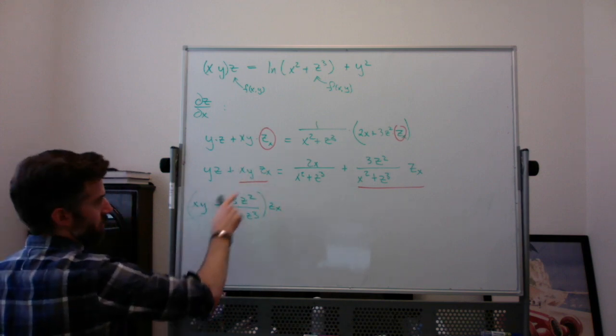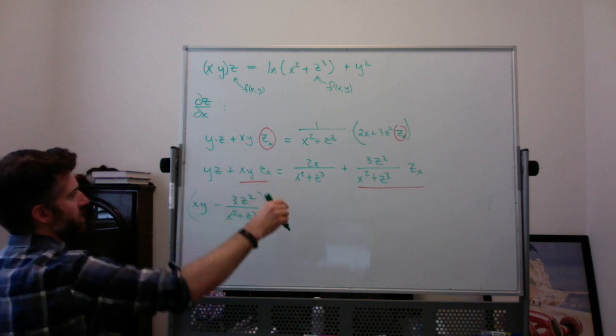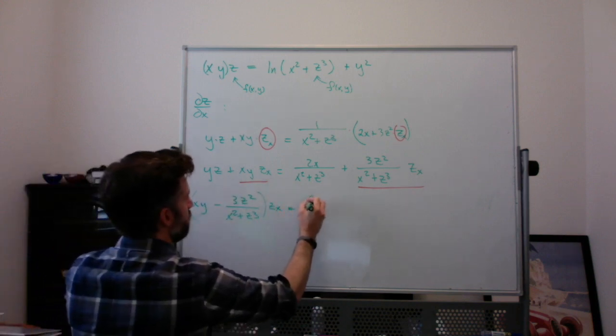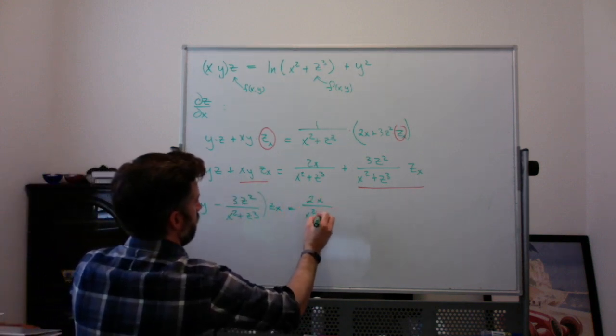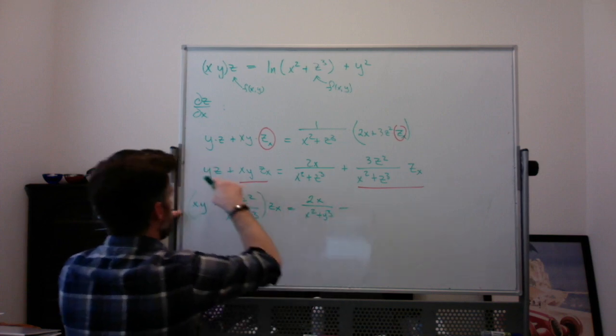It would be (xy - 3z²/(x² + z³)) times zx. In fact, right now, equal to 2x over (x² + y³) minus this yz here.